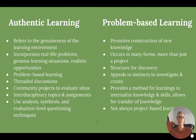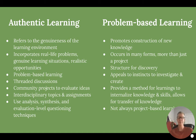Two of the terms we're going to define and look at really deeply during this module are authentic learning and problem-based learning. Authentic learning refers to the genuineness of the learning environment and incorporates things like real-life problems, genuine situations, and realistic opportunities. Many times, authentic learning is problem-based learning where students are asked to solve a problem in an authentic way. This allows students to have a voice and a little bit of choice in their learning opportunities, as well as in the products and the outcomes that they're producing, so it really can be a good source of motivation for our students.